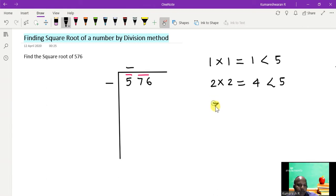So let me see if I can put 3. If I think of 3 and its square is 9, but no, it is not less than 5. So I cannot take 3. Therefore I have to put only 2 over here. So I put 2 here, and I also put the same 2 here.